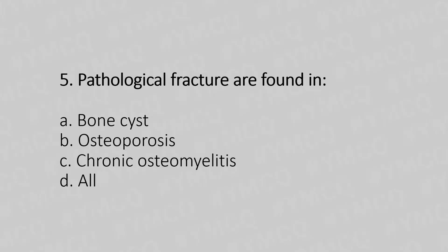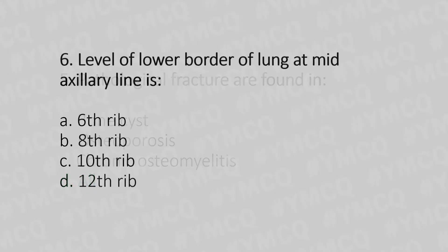Question 5: Pathological fractures are found in — Option A: bone cyst. Option B: osteoporosis. Option C: chronic osteomyelitis. Option D: all of the above. The answer is option D — all of the above.